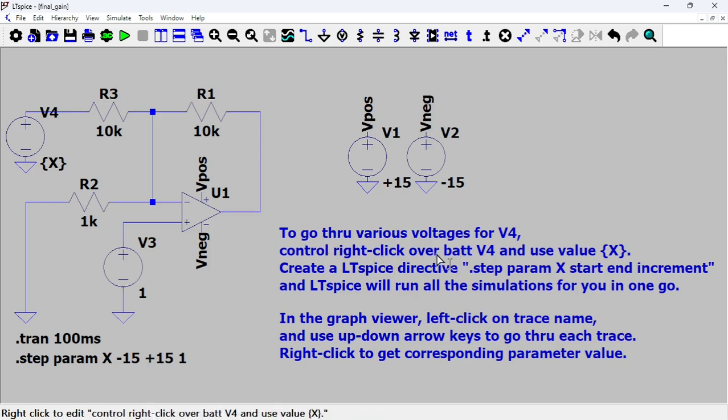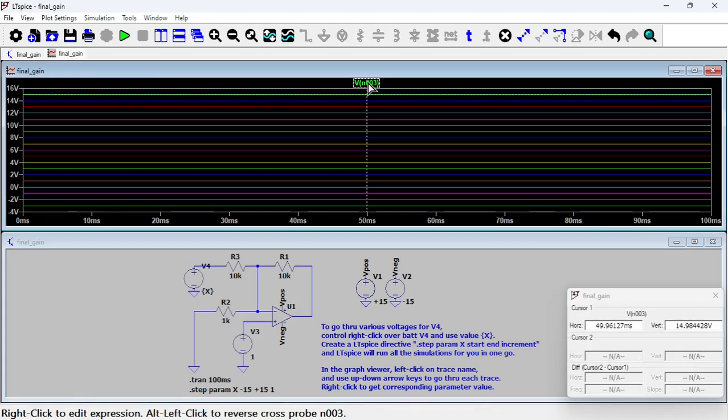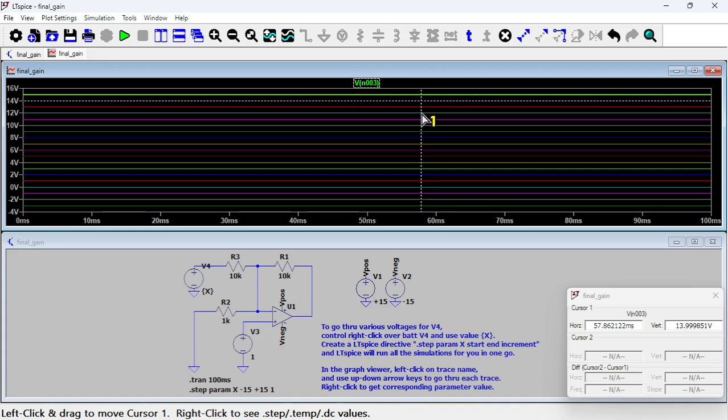Let's run this thing and see what happens. Basically all those lines you see is the voltage at the output for each parameter. Sometimes it's hard to see which is which. What you do is left click on the name of the trace here - the cursor is going to show up. You can go through each one of them, you right click and it's gonna tell you the value.